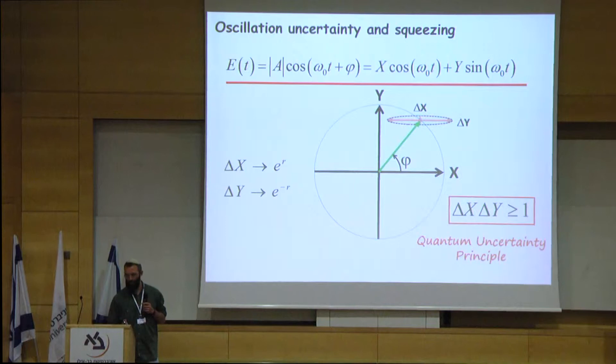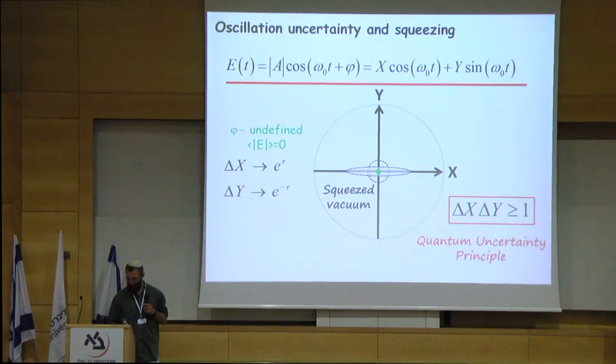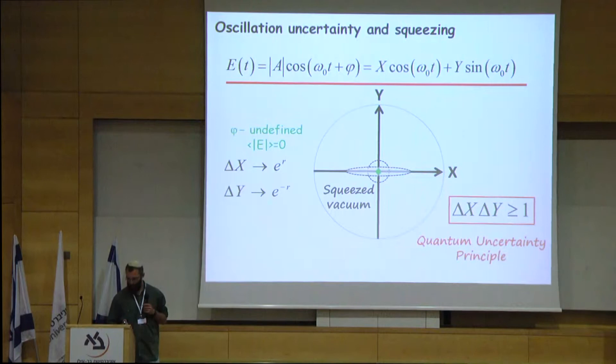This is true also for the vacuum state, where the average amplitude is zero and the oscillation phase is completely undefined. So how do we measure the quadratures of the oscillation?